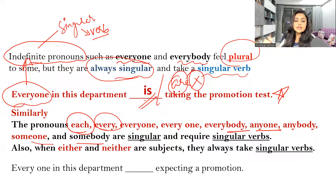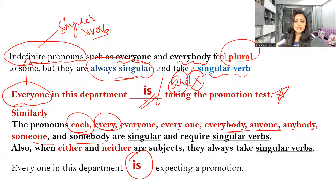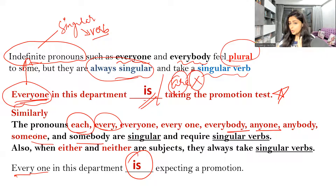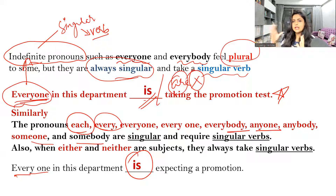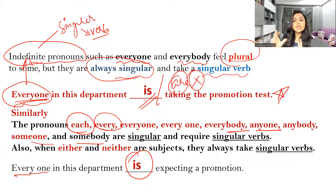Let's look at the second sentence: 'Everyone in this department is expecting a promotion.' So if you have a choice of 'is' or 'are', you will choose 'is'. Because everyone is an indefinite pronoun and indefinite pronoun is always singular — so it takes a singular verb.